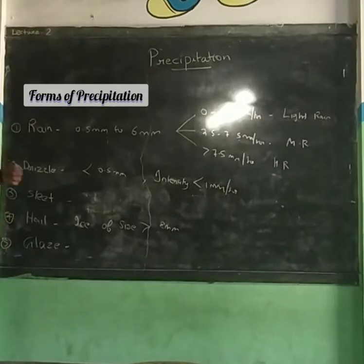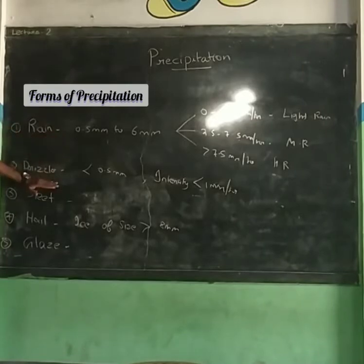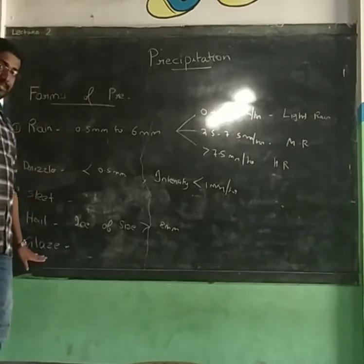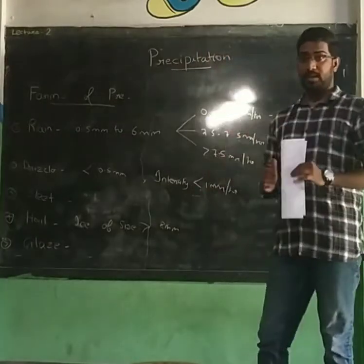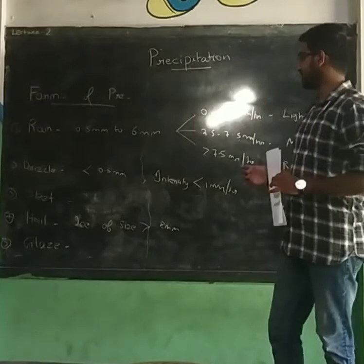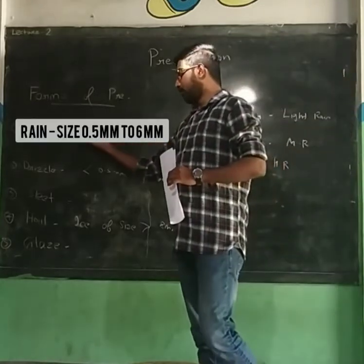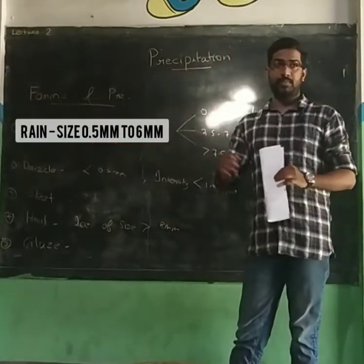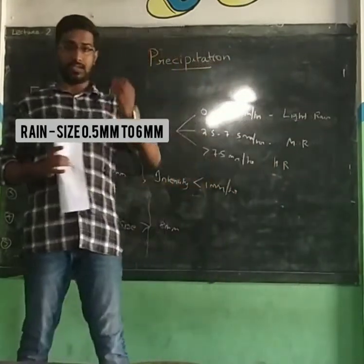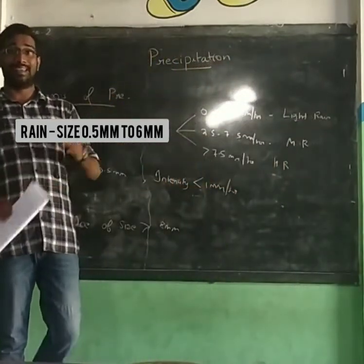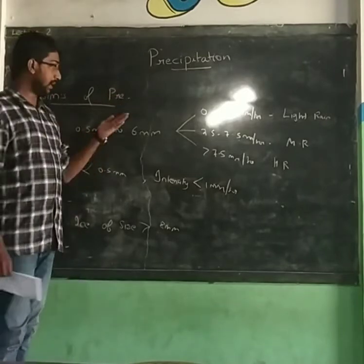Rain is a form of precipitation. The size of water drops in rain is classified in the range of 1.5mm to 6mm.